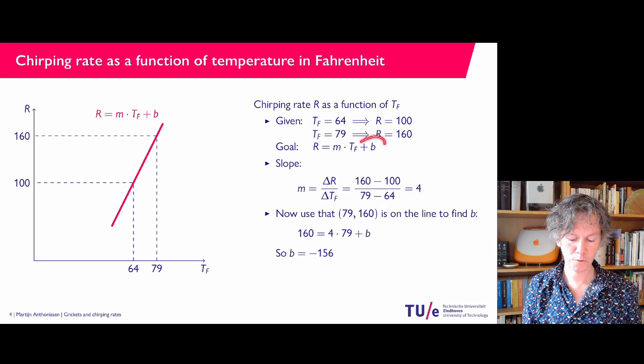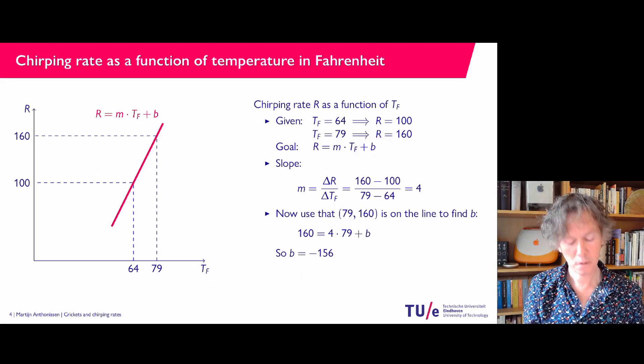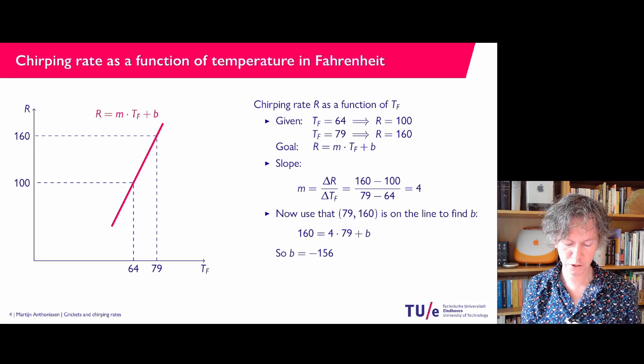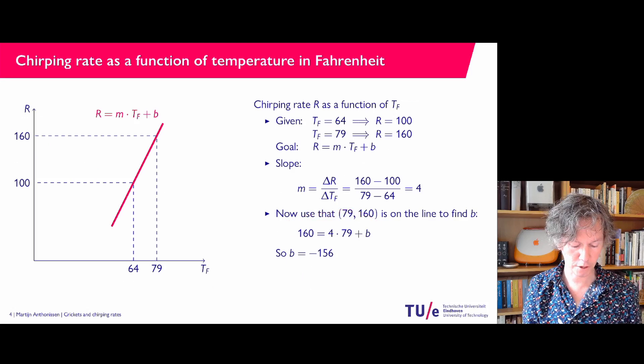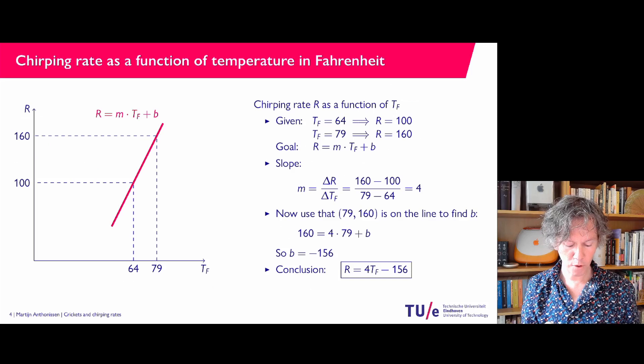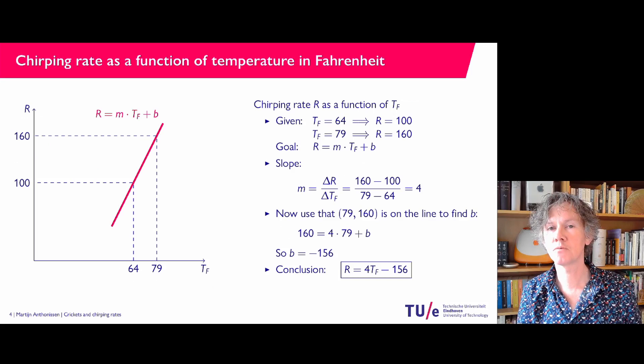Now we have found M equals 4, and we would like to find B. To do that, you take one of the data points — here I take that for a temperature of 79 the chirping rate is 160. Plugging that into the equation with the known M gives 160 equals 4 times 79 plus B. Solving for B, you find B equals minus 156. So the chirping rate is 4 times the temperature in Fahrenheit minus 156.